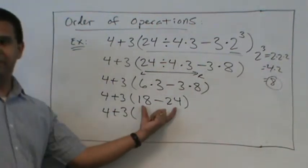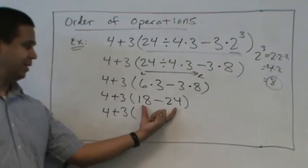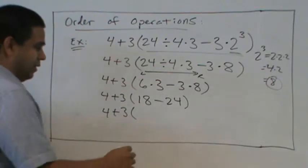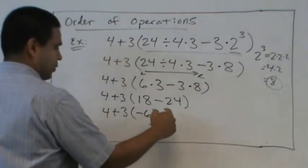Still in the parentheses. 18 minus 24. Negative 6. Negative 6 because 24 is bigger.